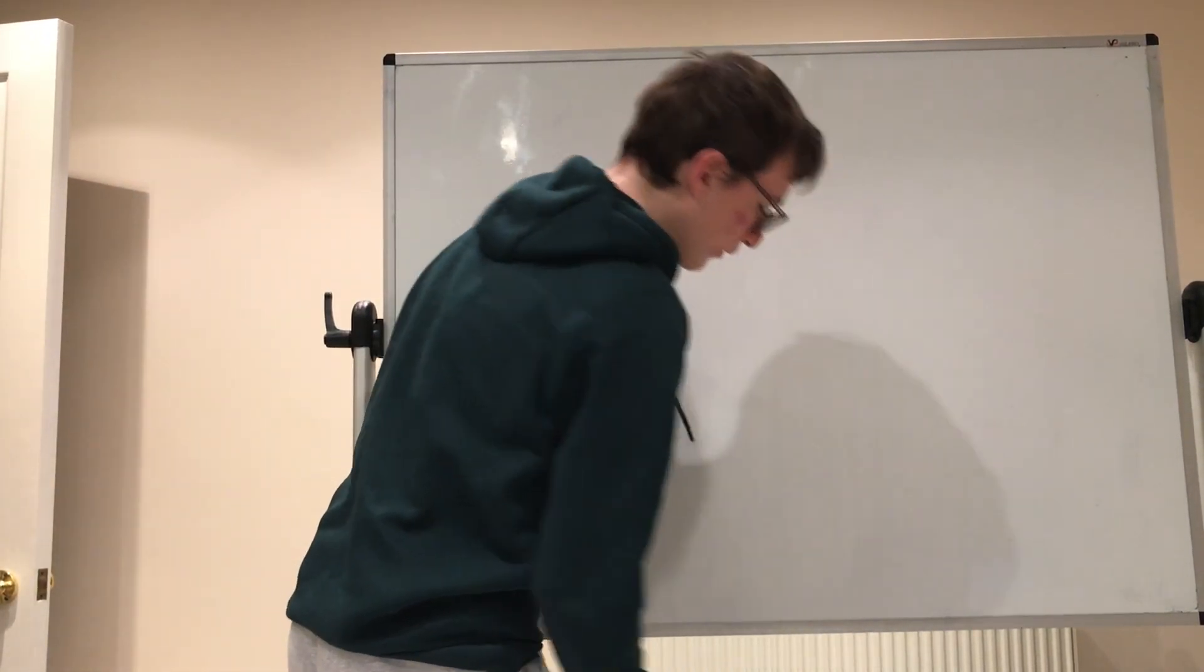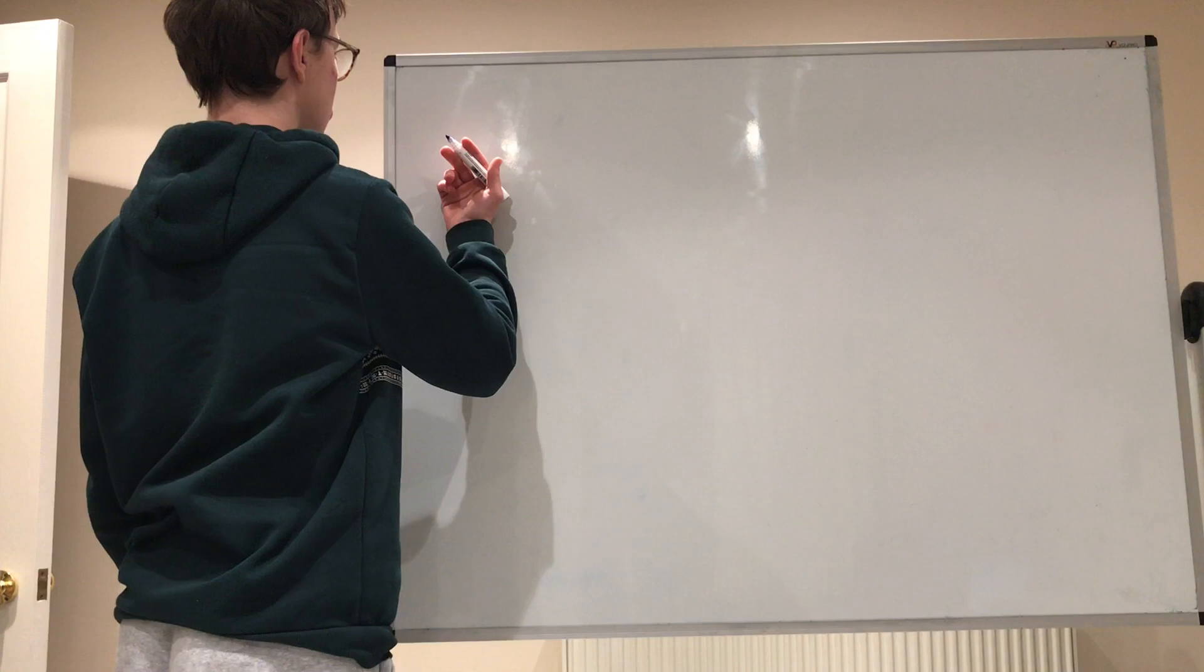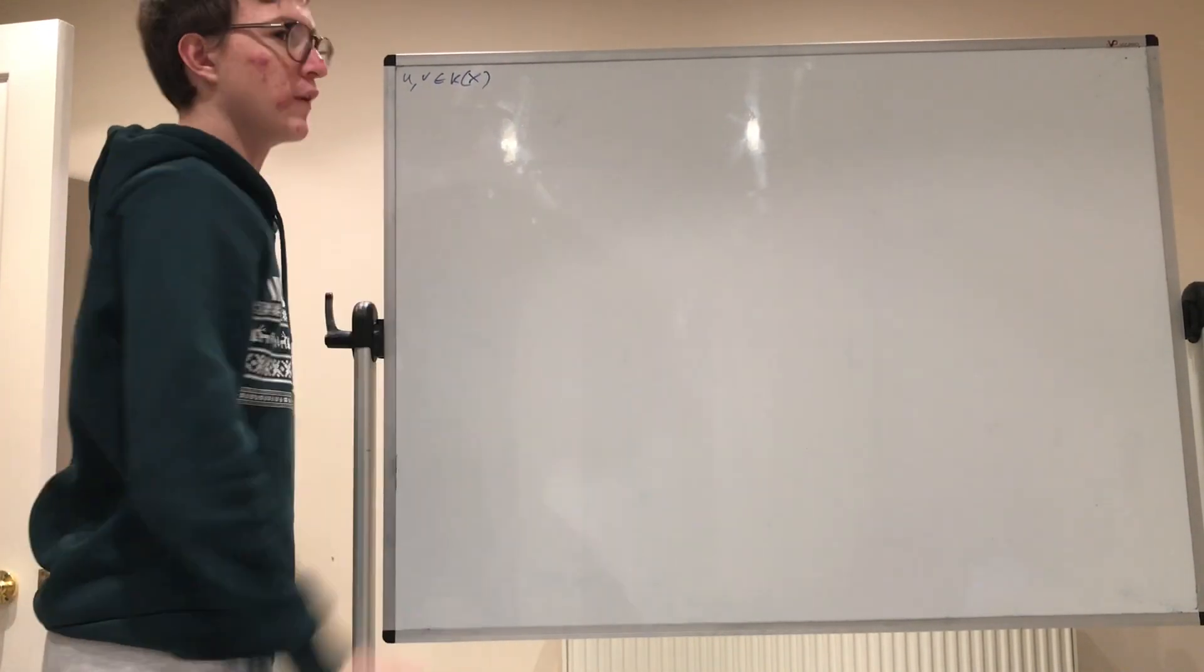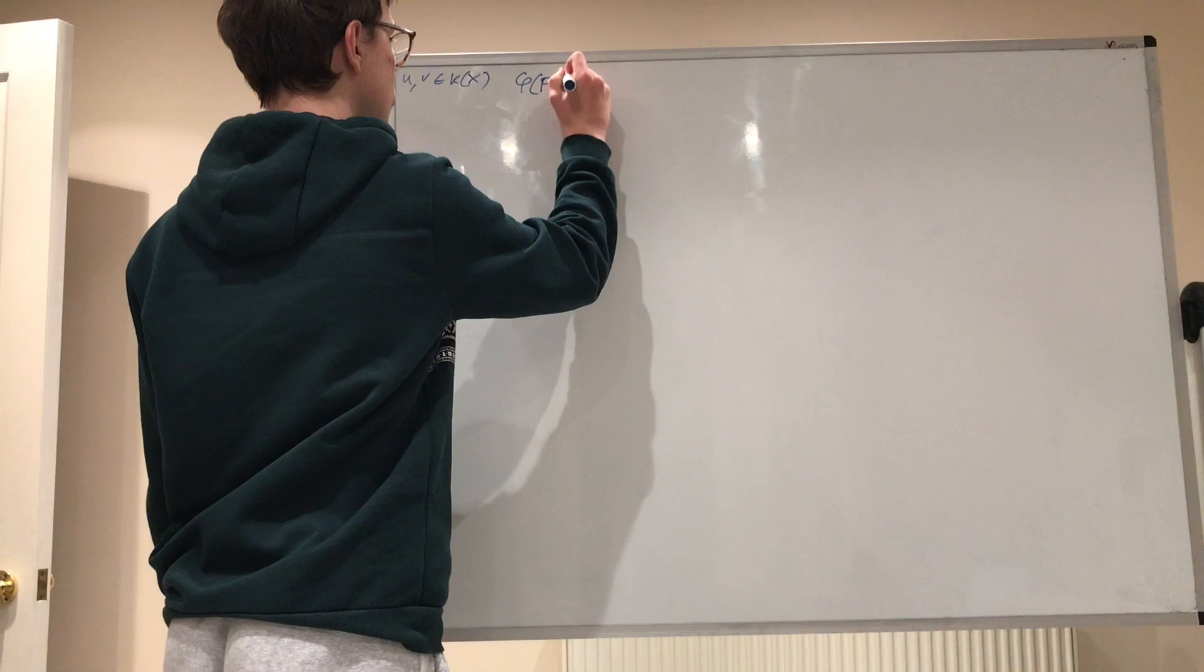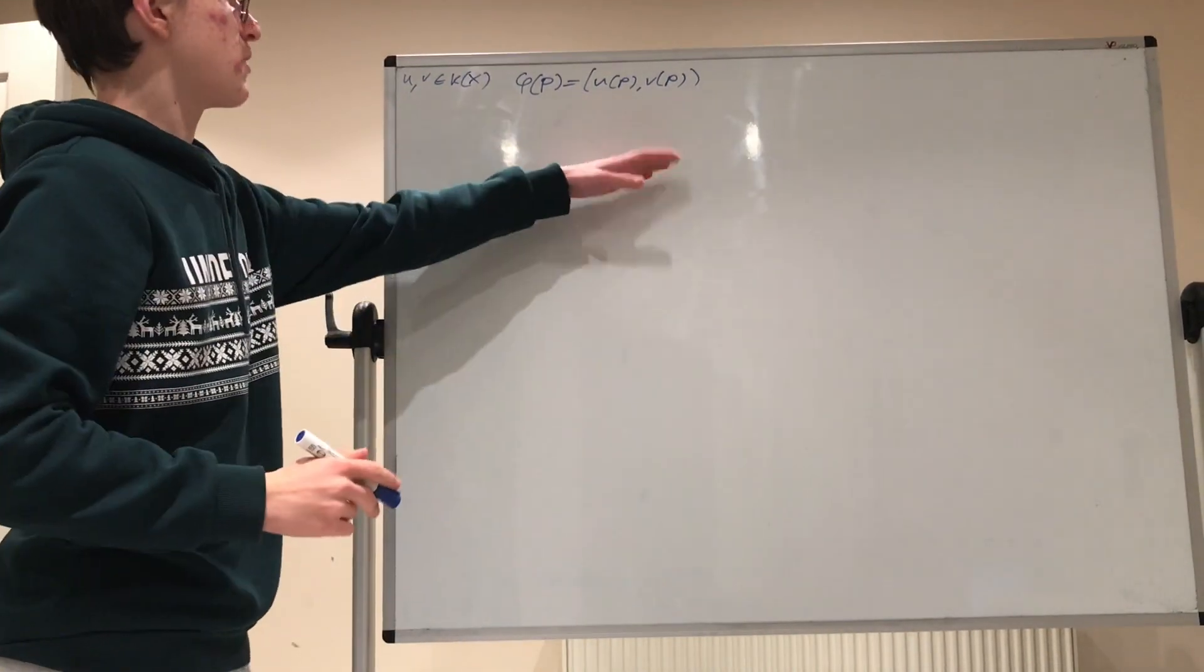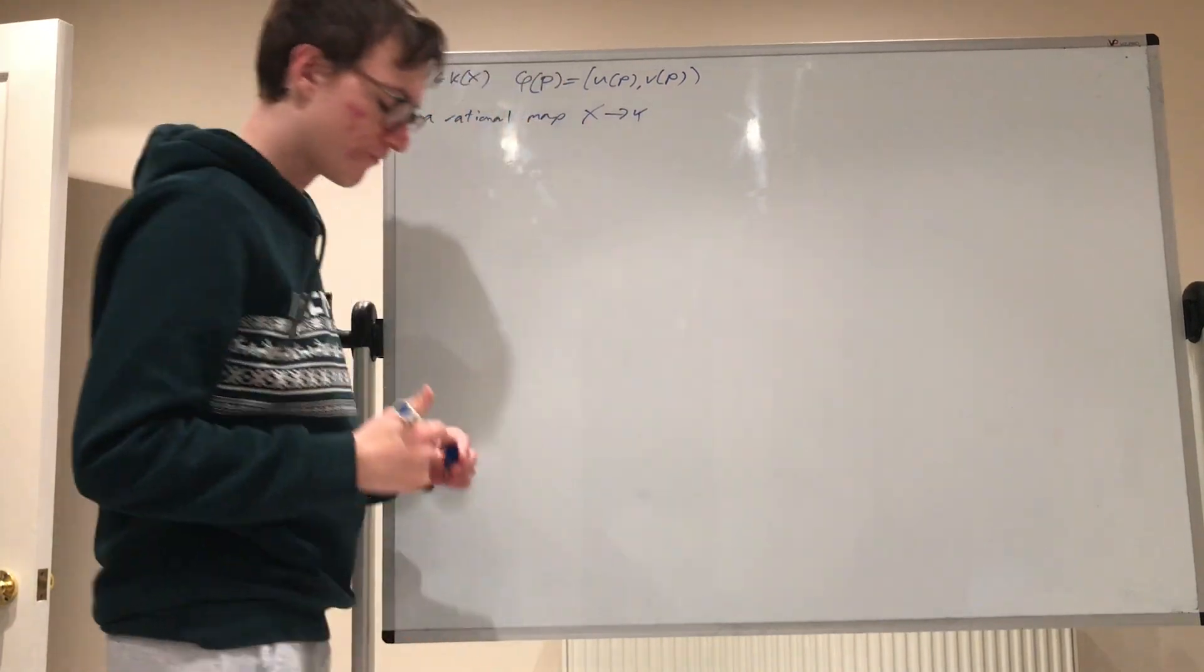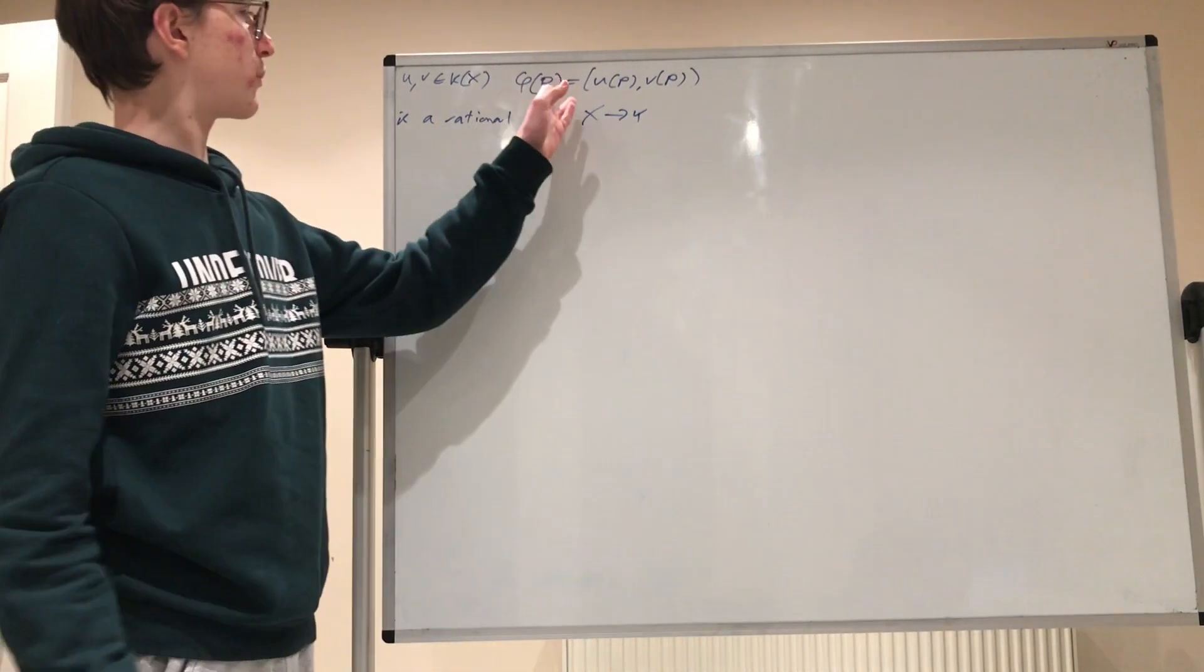So I'm actually going to start straight away with the definition. If we have two things, two polynomial numbers u and v, in this function field that we defined yesterday, k of x, for some curve x, then we have phi of p equal to u of p, v of p, being is a rational map from x to some curve y, where p ranges through all of the points p on the curve x.